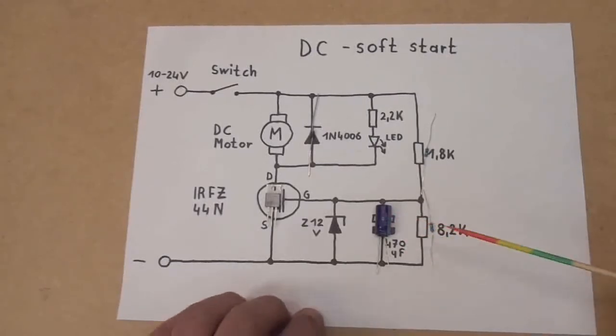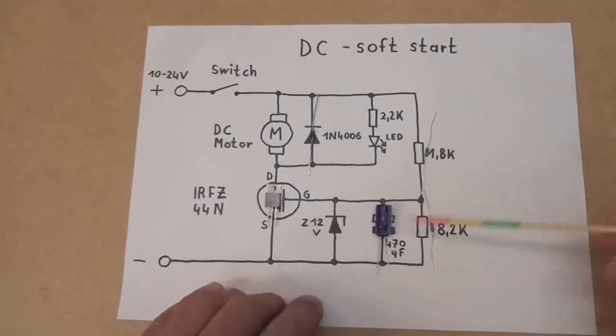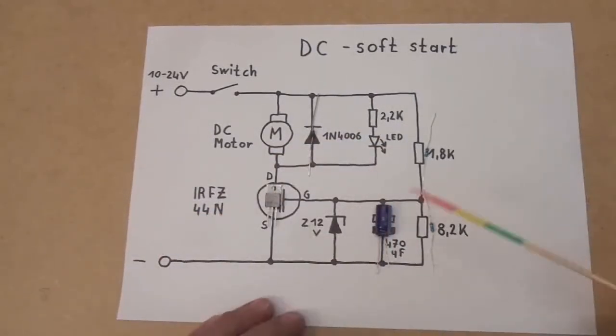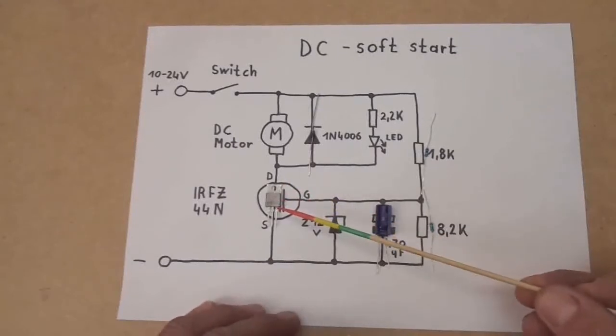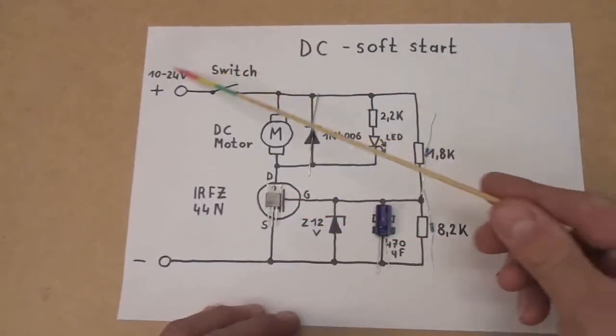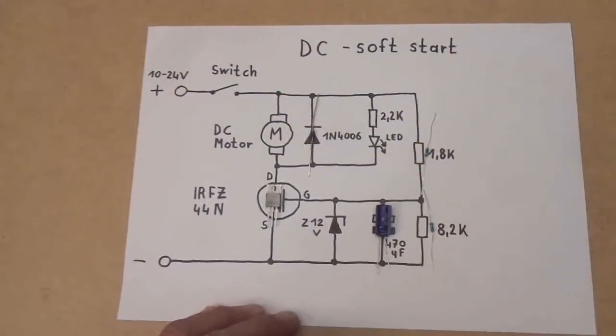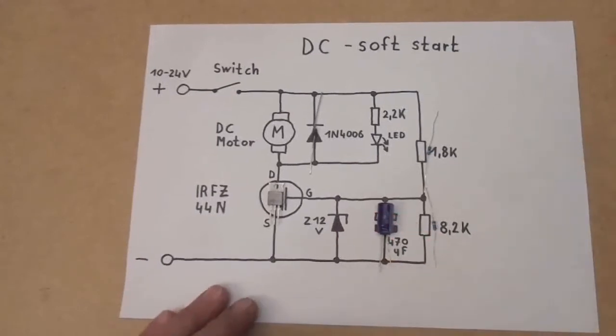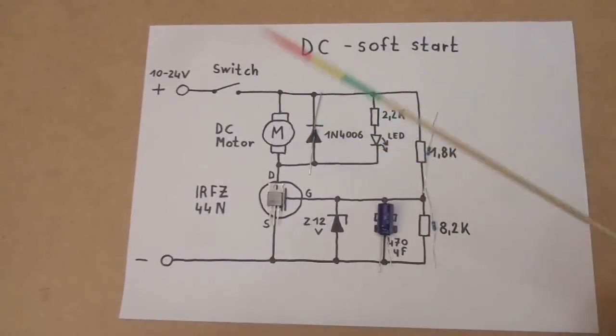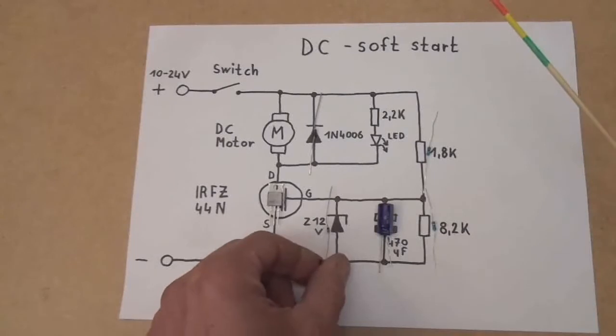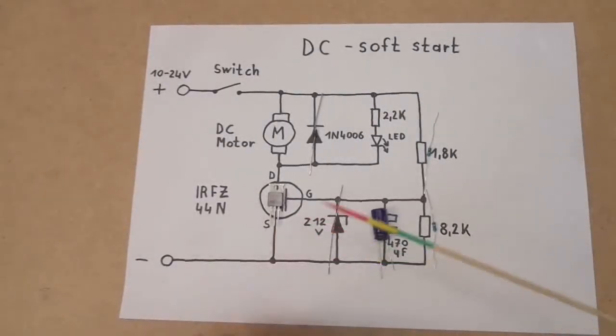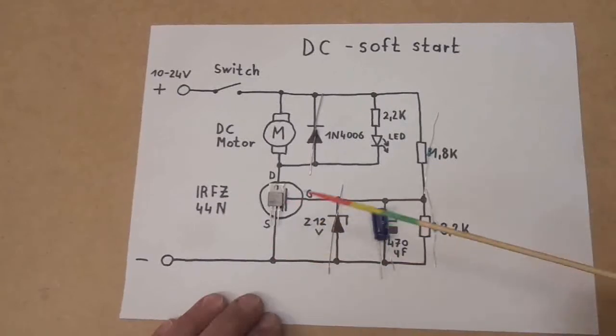And you need a zener diode because the maximum gate voltage of this MOSFET here is 20 volts. So if your VCC is below 20 volts you would not need a zener diode, but in this case I designed the circuit to go higher than 20 volts. That's why I'm adding a zener diode here to protect the gate of the N-channel MOSFET from overvoltage.